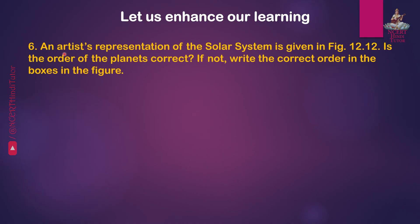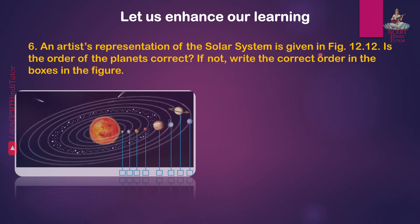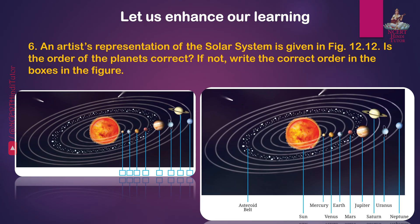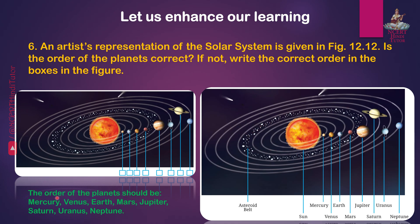Question 6: An artist's representation of the solar system is given in figure 12.12. Is the order of the planets correct? The order of the planets is not correct. The actual figure of the solar system shows: Sun, then Mercury (1st), Venus (2nd), Earth (3rd), Mars (4th), Jupiter (5th), Saturn (6th), Uranus (7th), Neptune (8th), and the asteroid belt. The correct order should be Mercury, Venus, Earth, Mars, Jupiter, Saturn, Uranus, Neptune.